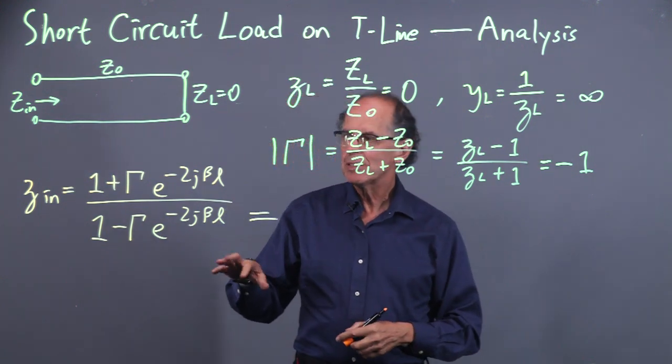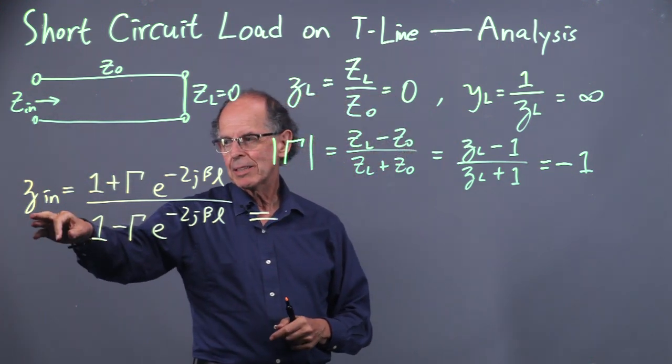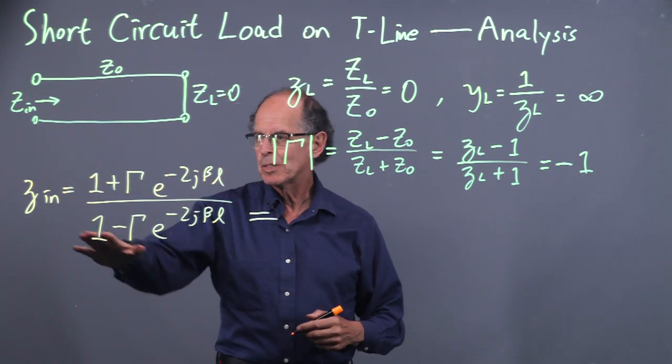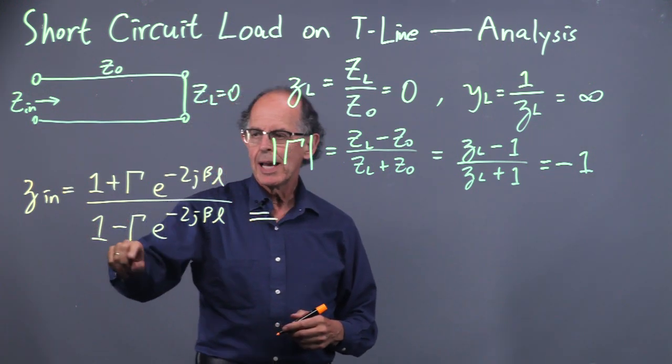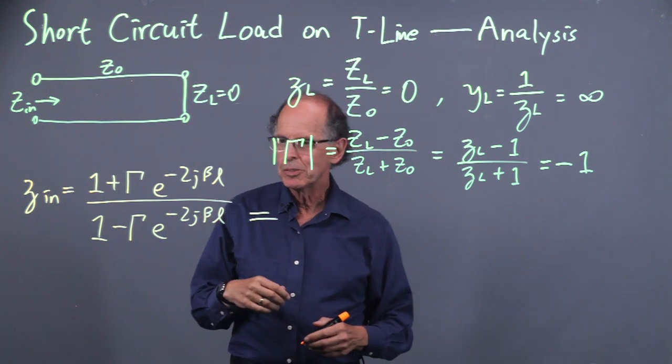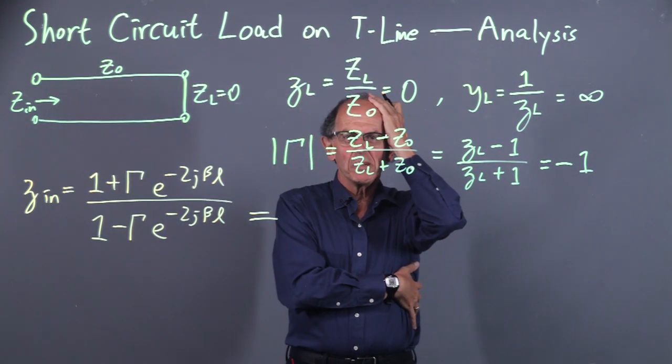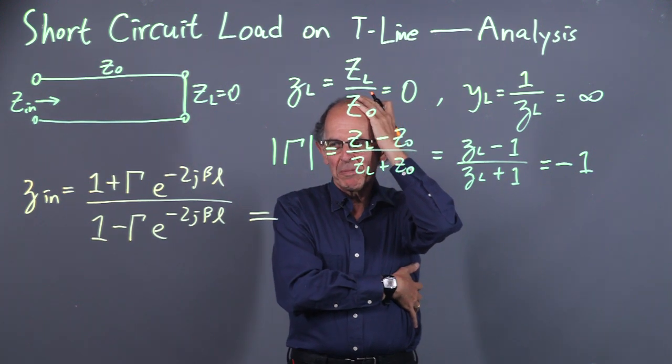Now we look at the input impedance Z in from the textbook. This is normalized and given by this relationship. Boy, what a messy relationship. I need some help figuring this out.